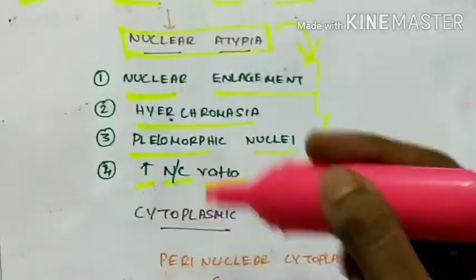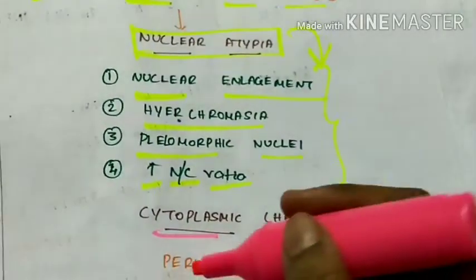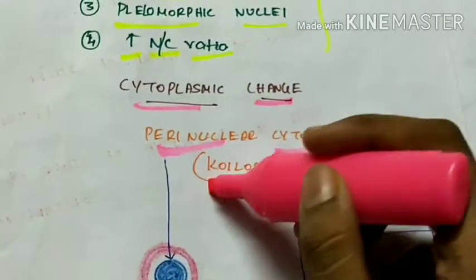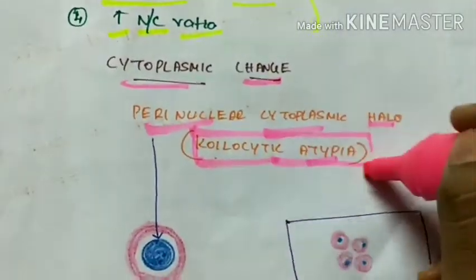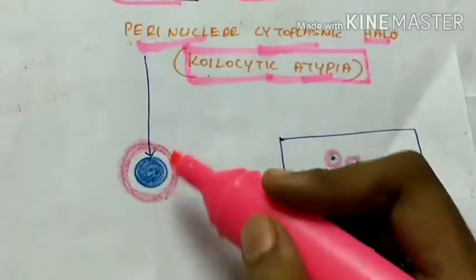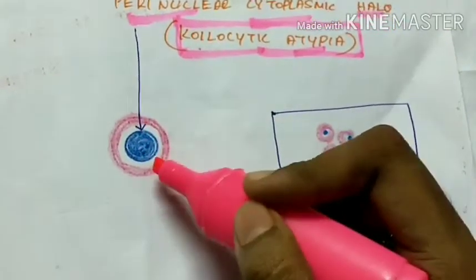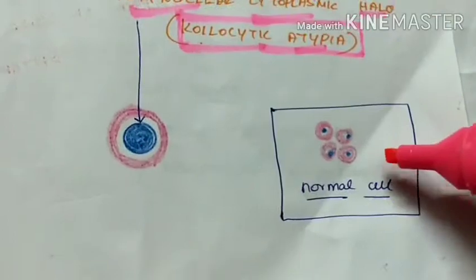Next is cytoplasmic change seen in SIL. There is presence of perinuclear cytoplasmic halo called as choelocytic atypia. This is characteristic of SIL. So this is a picture showing perinuclear cytoplasmic halo. So there is a halo in the perinuclear region. Whereas this is the normal cell.